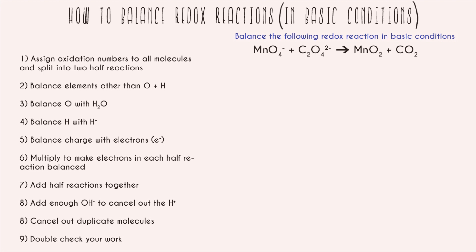We have a reaction on the right-hand side and all we have to do is follow these nine steps to get our answer. These problems are obviously more complicated than regular balancing equations, but they still have a sequence of steps to follow. As long as you do these steps you're going to be fine. Step number one is to assign oxidation numbers to all molecules and split into two half reactions.